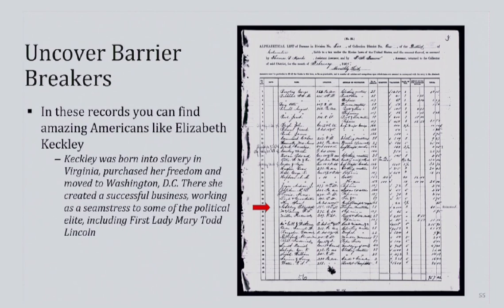In these records, you can uncover amazing Americans like Elizabeth Keckley. Keckley was born into slavery in Virginia, purchased her freedom, and moved to Washington, D.C. There she created a successful business working as a seamstress with some of the political elite, including First Lady Mary Todd Lincoln. Here she is in the February 1865 list, taxed on her business worth an impressive $2,000.